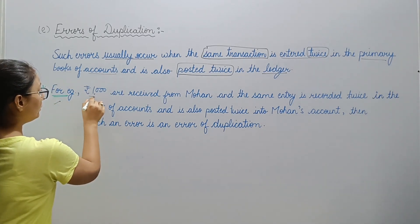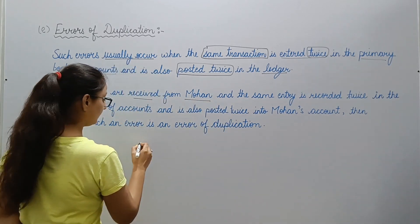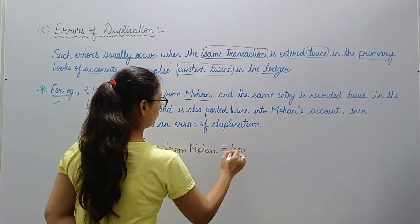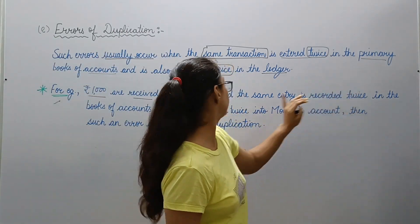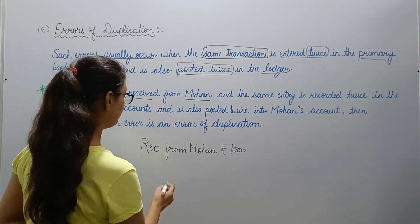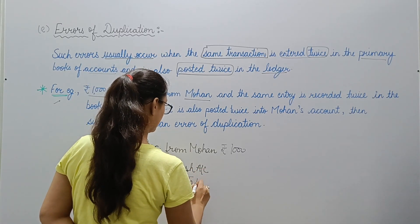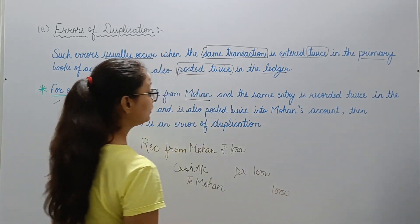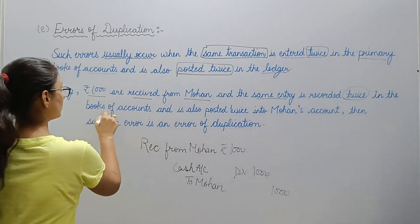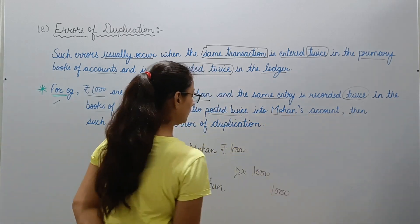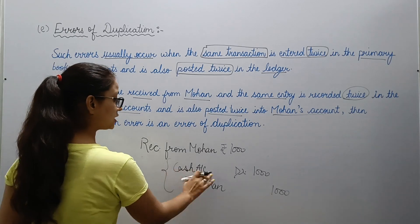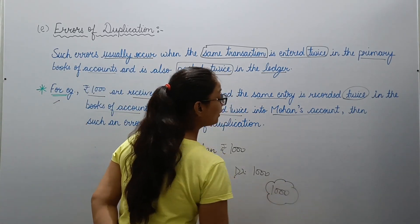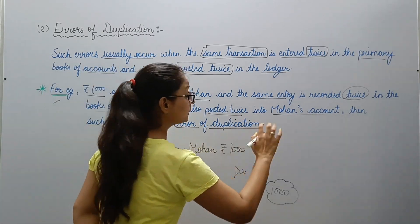Example: Rupees one thousand received from Mohan, and the same entry is recorded twice in the books of accounts. The entry should be: Cash account debit, to Mohan, rupees 1,000. But what happened is you recorded this same entry — cash to Mohan — two times in the books of accounts, and when Mohan's separate account is made, the one thousand rupees is also recorded twice there. Such an error is called error of duplication — you made duplicate entries.